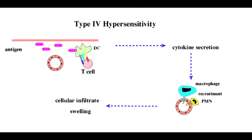What is the mnemonic to help you remember all 4 hypersensitivities? The mnemonic is the word ACID. A stands for anaphylactic and atopic for type 1 hypersensitivity. C stands for cytotoxic or antibody mediated, which is type 2. I stands for immune complex or type 3 hypersensitivity. And D is for delayed or cell mediated type 4 hypersensitivity.